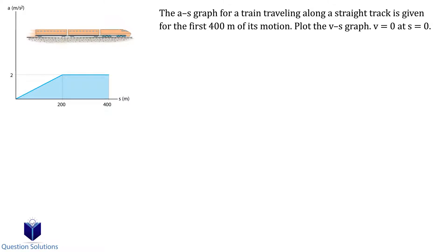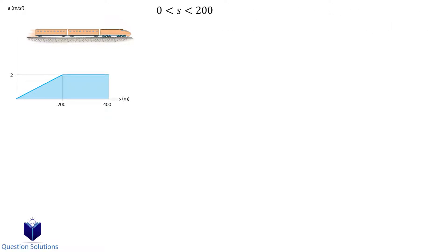This question asks us to plot the velocity versus position graph. To do that, let's first write down the equations for the segments of the graph, between 0 and 200 meters, and 200 to 400 meters.